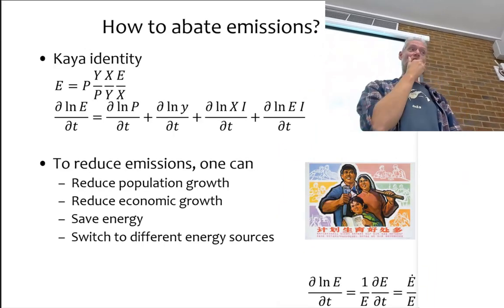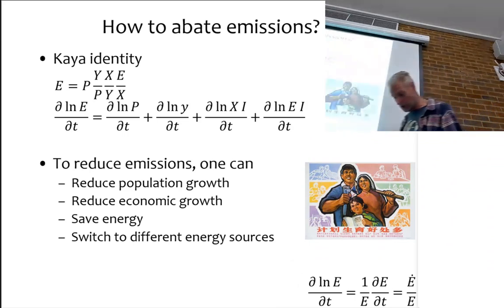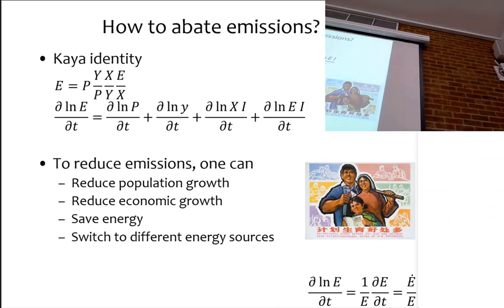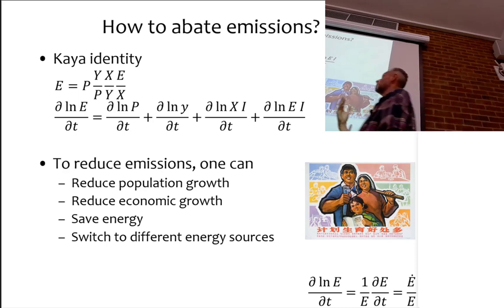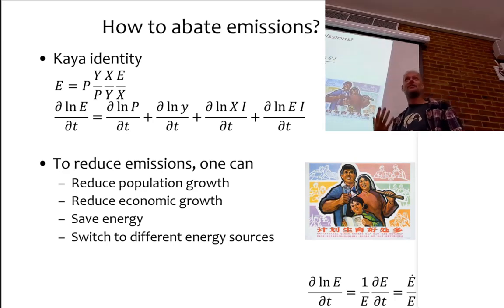The starting point for options for greenhouse gas emission reduction is also the Kaya identity. The Kaya identity states that emissions equal the number of people times per capita income, times the energy intensity, times the carbon intensity of the energy sector. And that is an identity — it is true because P cancels against P, Y against Y, X against X. So it's an identity; you can't argue with it.